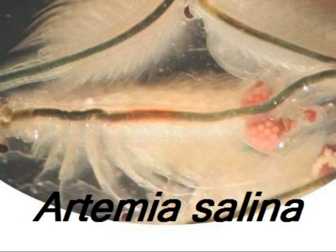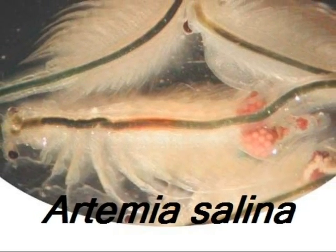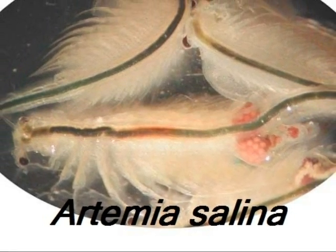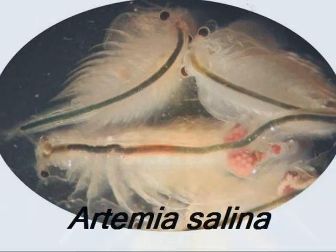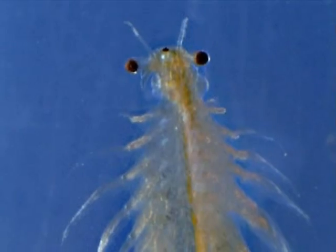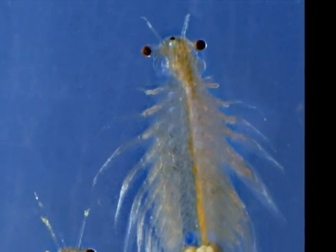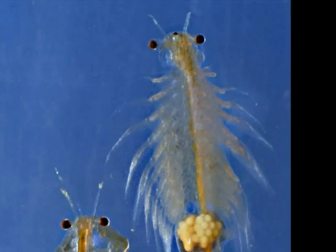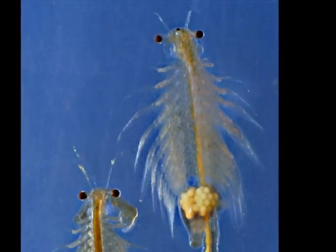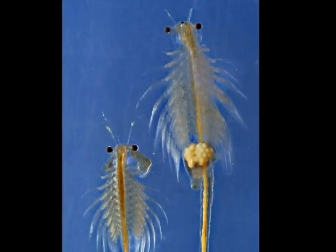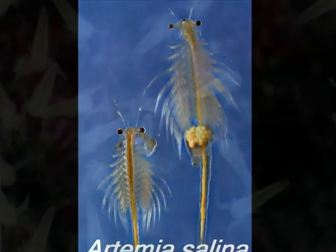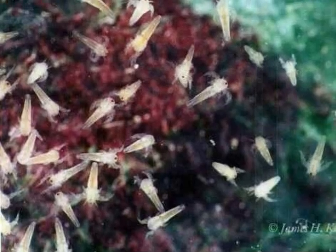Brine shrimp, also known as Artemia salina or sea monkeys, are small crustaceans found in saltwater lakes but rarely in the ocean. A common biology experiment involves testing the ability of brine shrimp to grow in different salt concentrations.